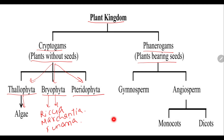Next, we will study about the pteridophyta. Pteridophytes are the terrestrial true land plants. Some examples include the fern, or you can say Nephrolepis.